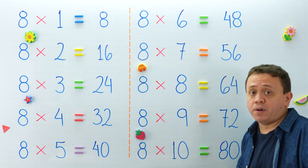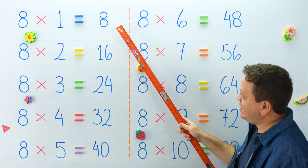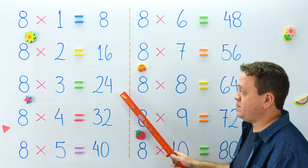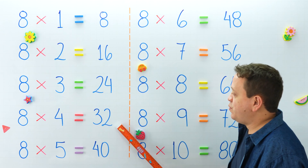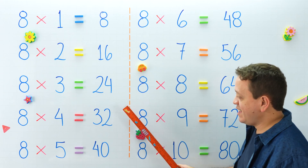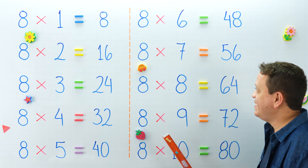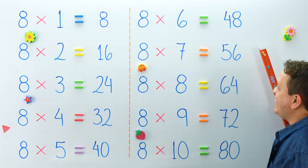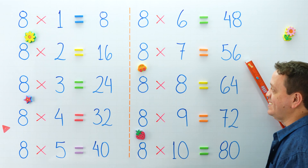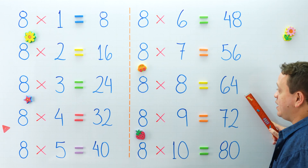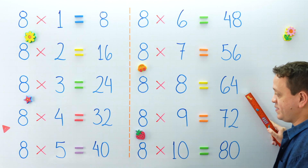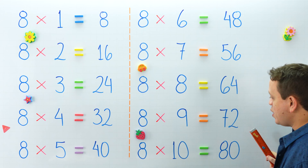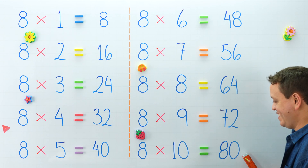Why don't we check our products again? 8 times 1 equals? What is 8 times 2? What about 8 times 3? 8 times 4 equals? 8 times 5 equals? Over here, 8 times 6 is equal to? 8 times 7 equals? 8 times 8 is equal to? And 8 times 9 equals? What is 8 times 10? You are right.